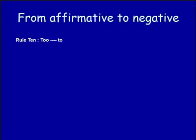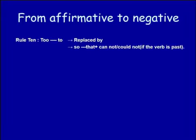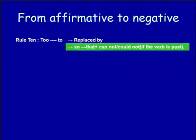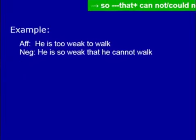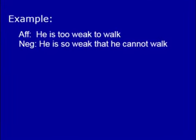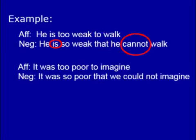Rule number ten: 'too...to' is replaced by 'so...that.' 'Too' is replaced by 'so' and the second 'to' is replaced by 'that.' If the principal clause verb is present simple tense, we use 'cannot.' For example: 'He is too weak to work' becomes 'He is so weak that he cannot work.' In the place of the first 'too,' we use 'so,' and in the place of 'to,' we use 'that,' then 'cannot' because the verb is present simple tense.